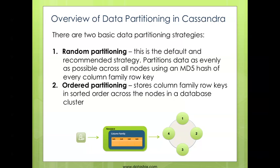The second partitioning strategy is the ordered partitioner. As its name implies, it stores data in sorted order across the nodes in your cluster. However, this is really not the recommended strategy because a number of different issues can arise when you use the ordered partitioner, such as having a write hotspot in your cluster, such as nodes having a lot of data and other nodes having very little. So unless you really have to use the ordered partitioner, it's recommended that you use the random partitioning strategy in Cassandra.